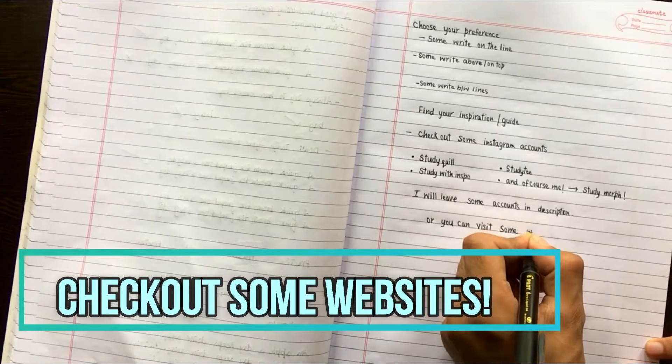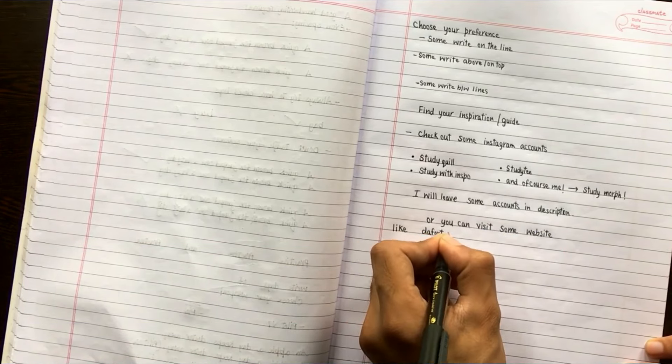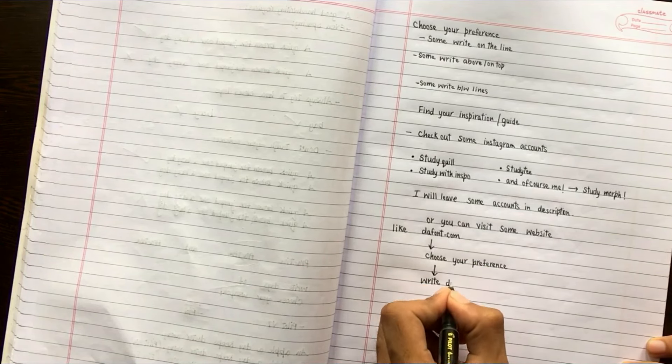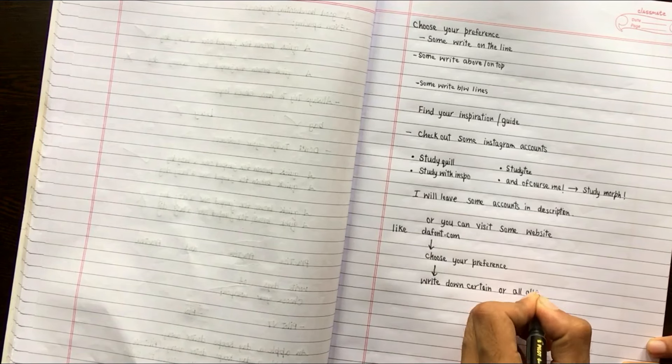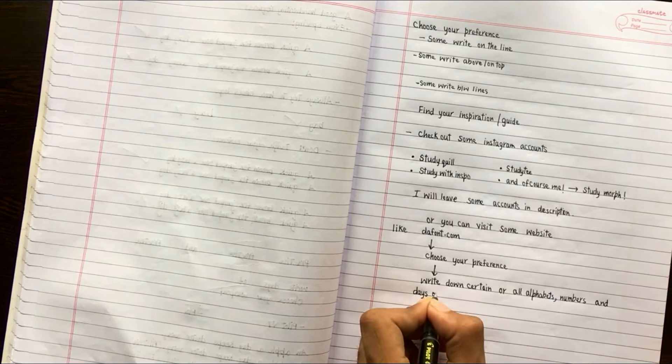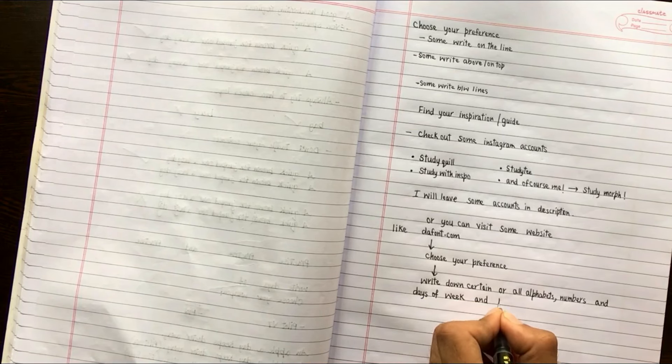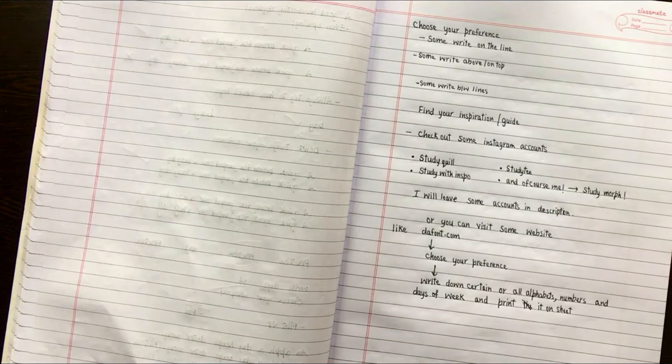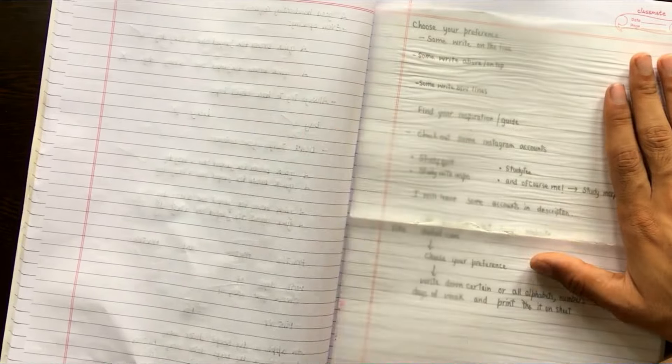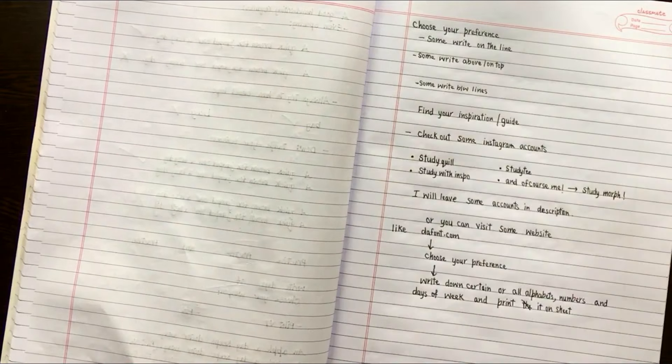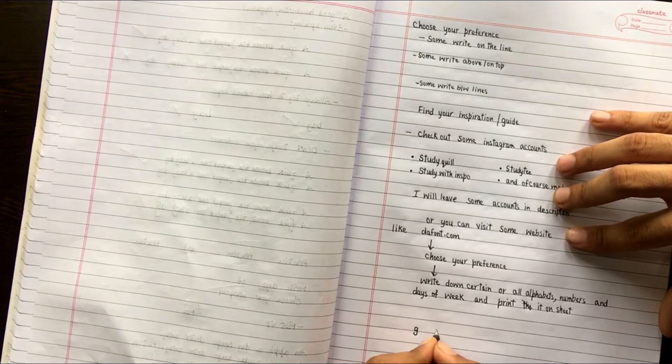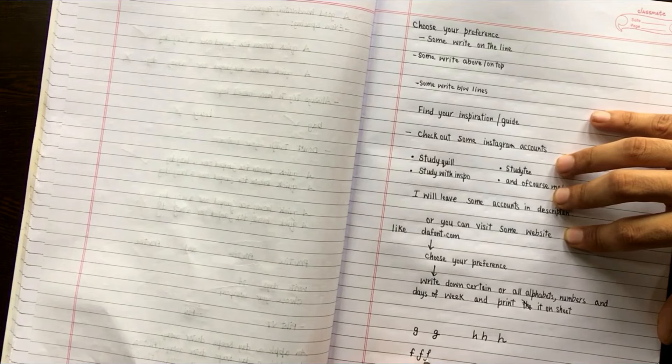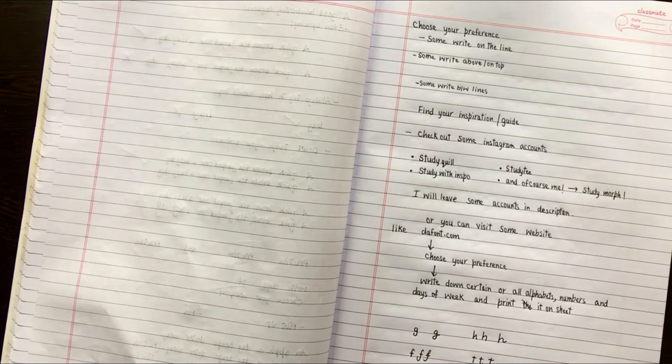Then check out some websites. You can also check out some websites for handwriting fonts. Choose your preference, and after that, choosing your right kind of font, then you can write alphabets, numbers, and days of week and print it out. Later on you can just apply a grease paper or kitchen sheet or butter paper that you can easily get from the pantry. And if you don't have one, then place your sheet on which you have typed those letters on the window.